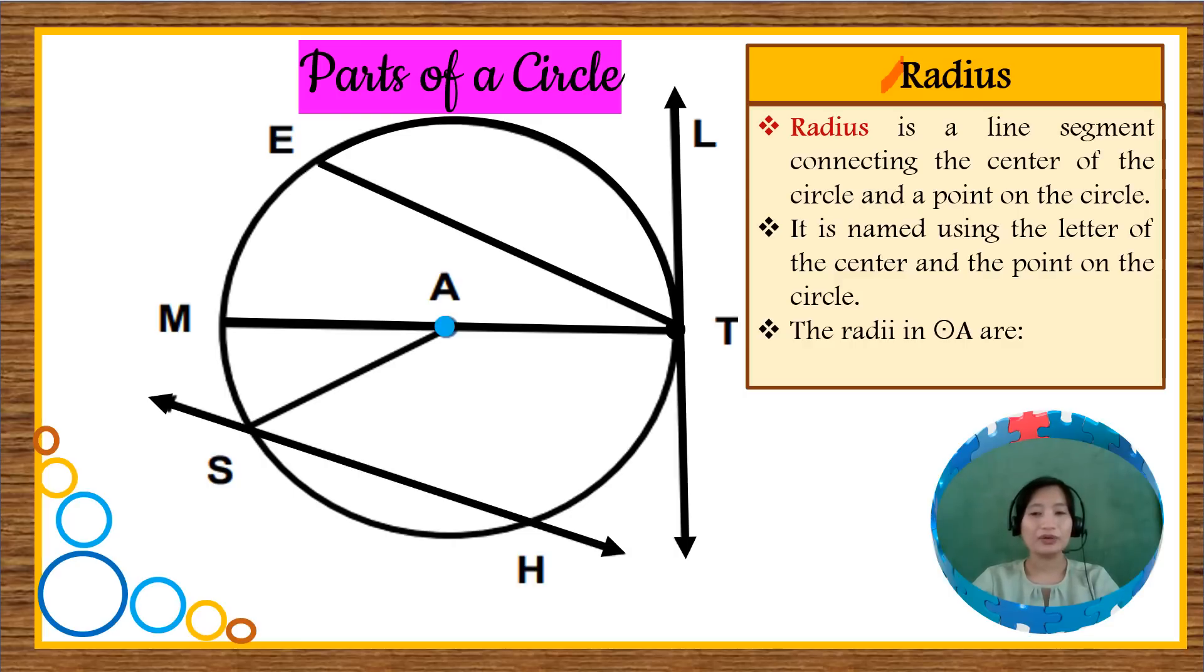As for the illustration on the left, the radii, which is the plural for radius in circle A are the following. We have line segment AS, line segment AM, and line segment AT. Those are the radii in circle A.